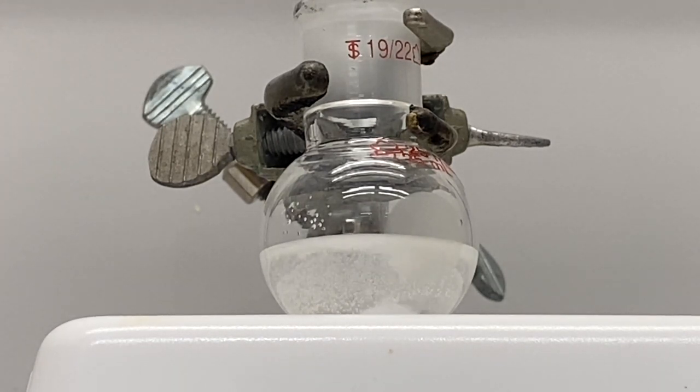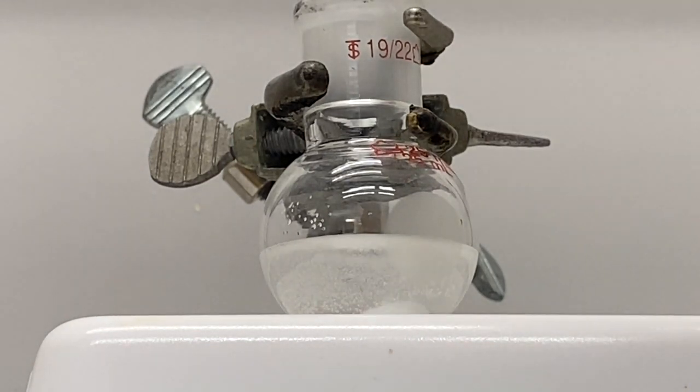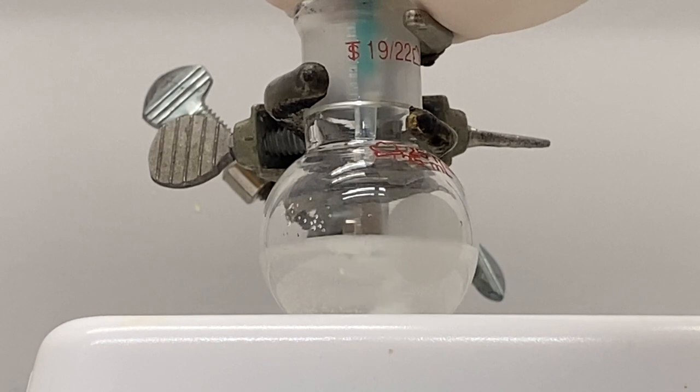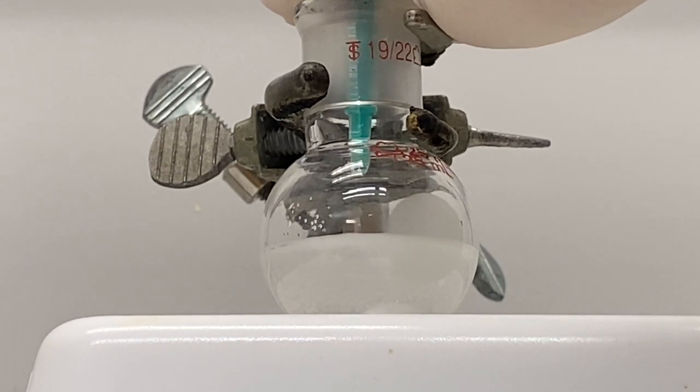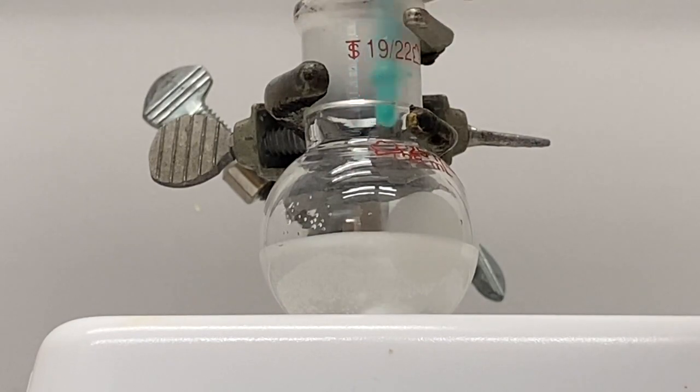So as you can see, most of our solid has dissolved. So now we're just going to add our aldehyde. Here's where you're going to have to figure out how much I'm adding. I'm going to add the aldehyde and then this is going to stir for a bit, and we'll check it with TLC to see if it's finished here in a little while.